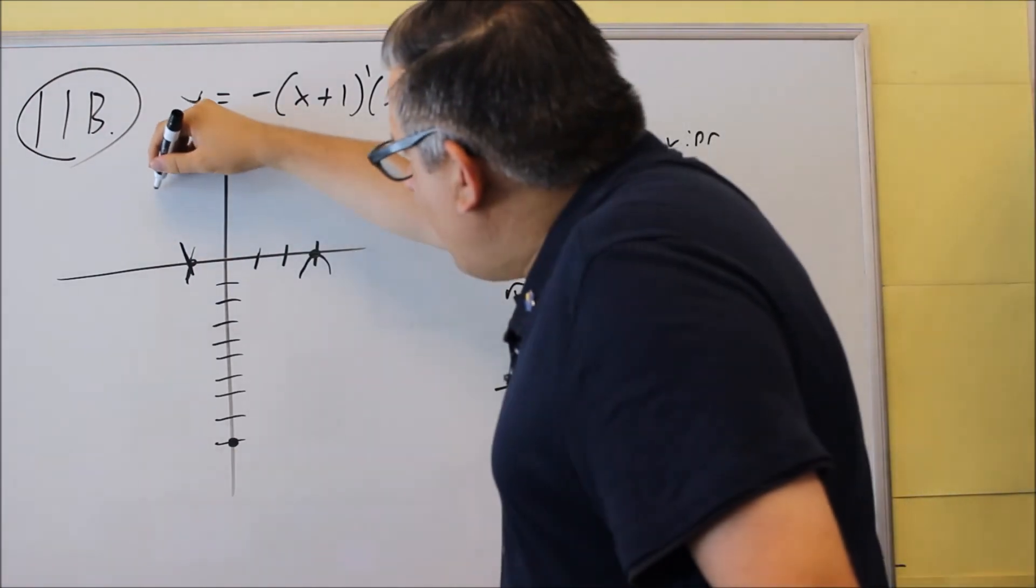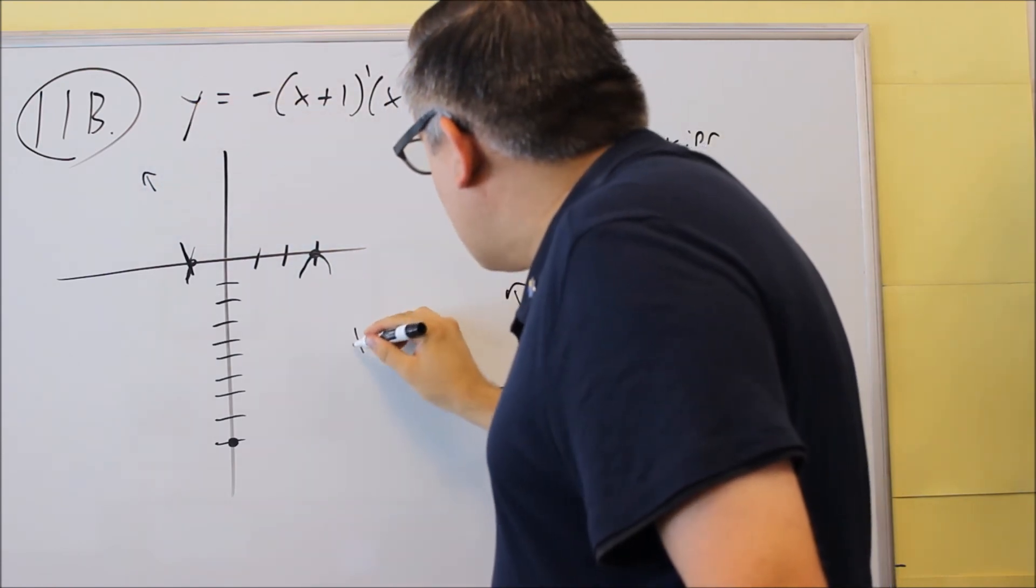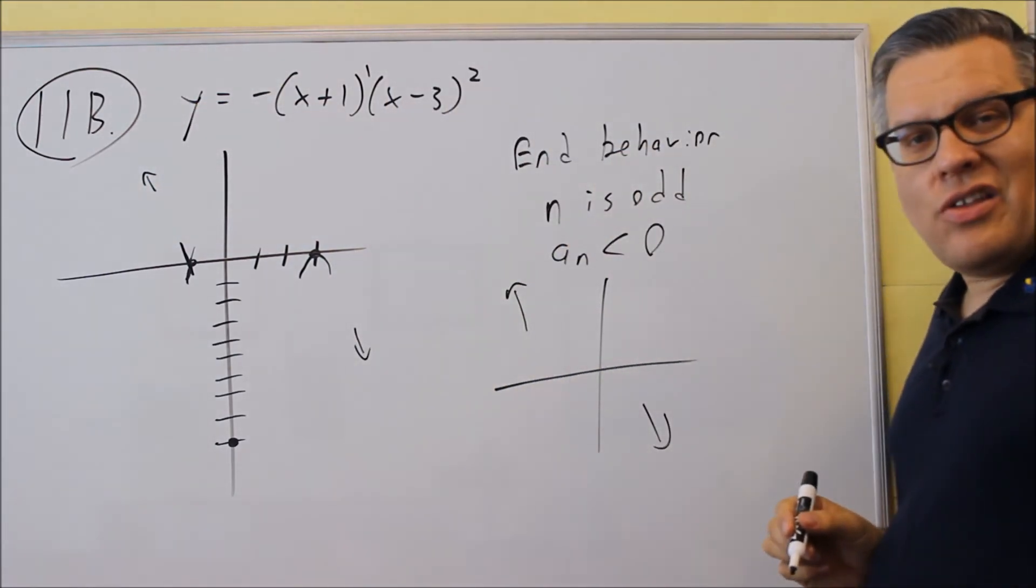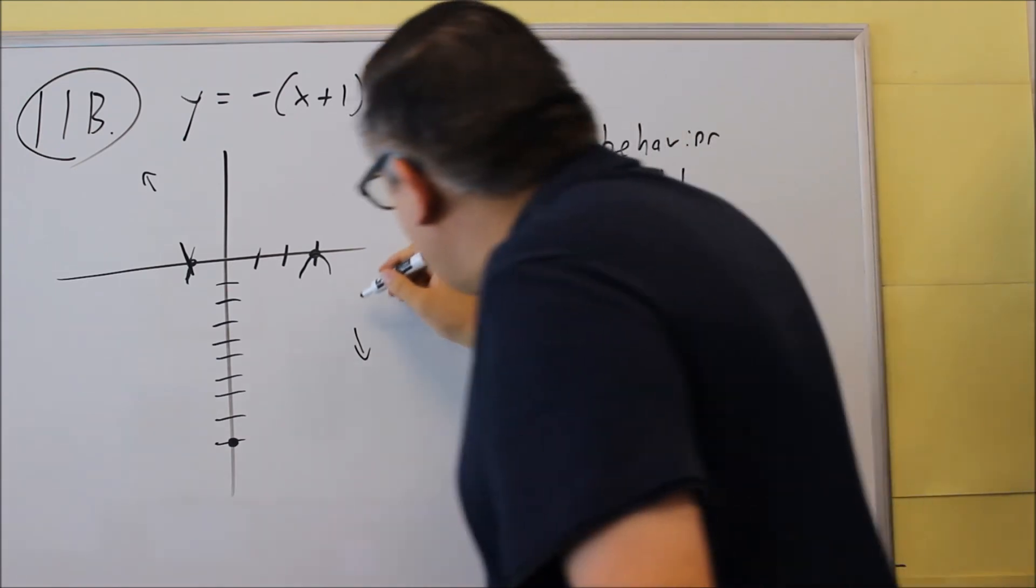Which means we want to take a look at the different patterns we have for end behavior that were mentioned in the notes. If n is odd and a_n is less than zero, we end up having this type of situation. The graph is going to go up and to the left, do something in the middle, and go down and to the right.